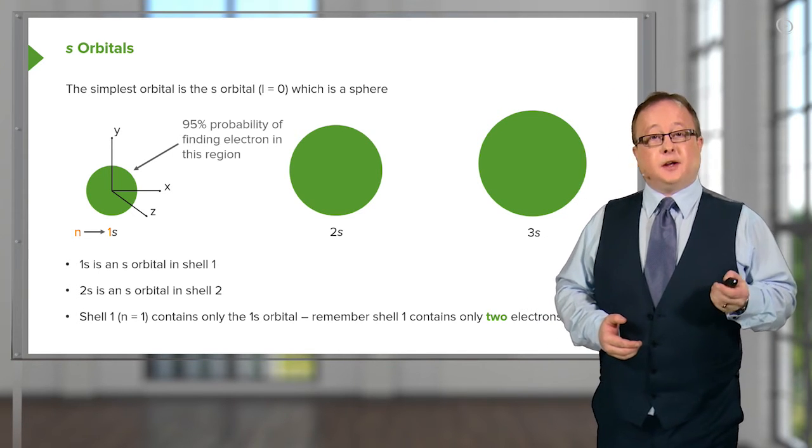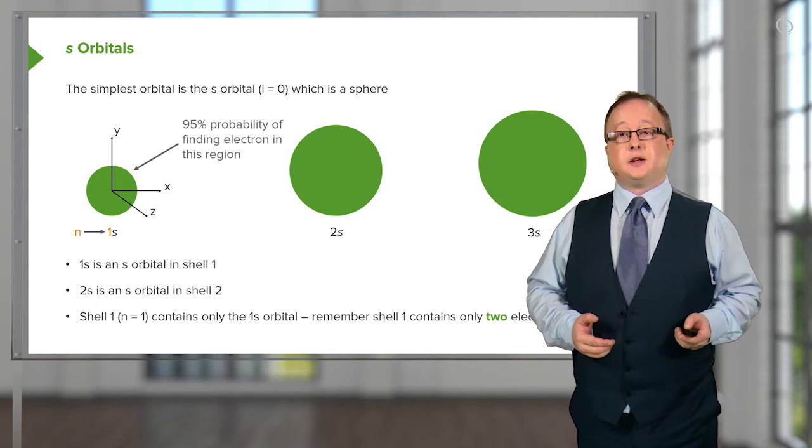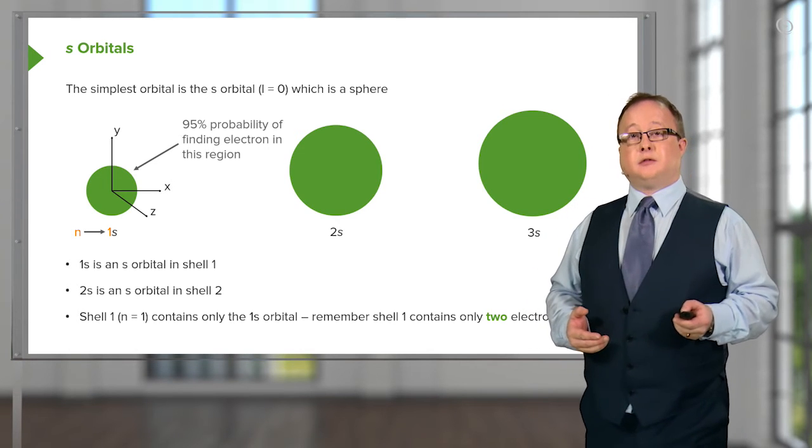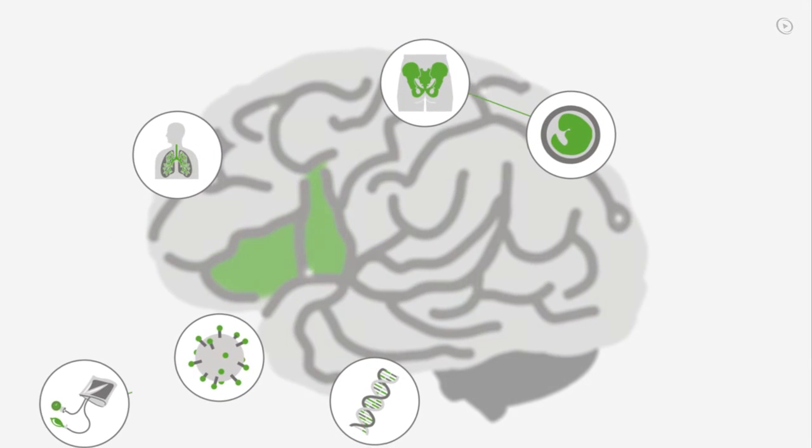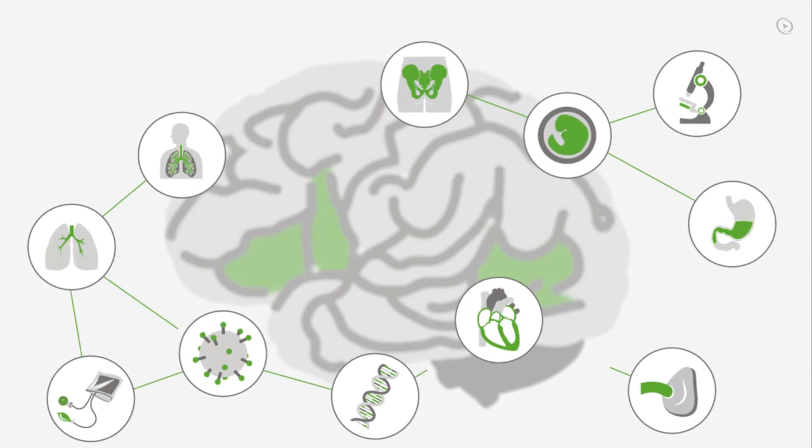And each of these, the 1s, the 2s and the 3s, can each contain two electrons. You just completed your first video of the world's best medical exam preparation.